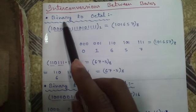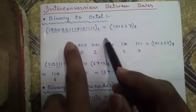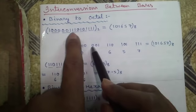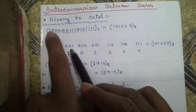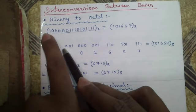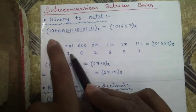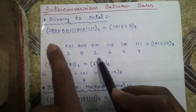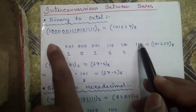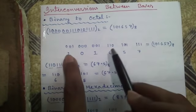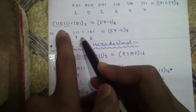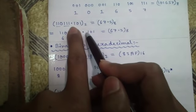Now interconversion between bases — converting binary to octal directly without using the decimal system. Scan the integer part from right to left and group in groups of 3 bits. If a group has fewer than 3 digits, add zeros at the extreme left. Write the decimal equivalent for each group: for example, 001 = 1, 000 = 0, 110 = 6, 101 = 5, 111 = 7 — so it becomes 10657 in octal. For the fraction part, scan from left to right and group in 3, padding zeros at the extreme right if needed.